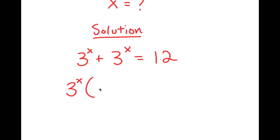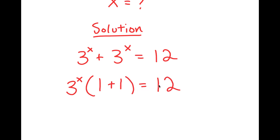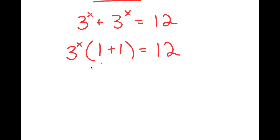So I get 3 to the power of x times — well, 3 to the power of x divided by 3 to the power of x is 1, so 1 plus 1 is equal to 12. And 1 plus 1 is 2, so I get 3 to the power of x times 2 is equal to 12.